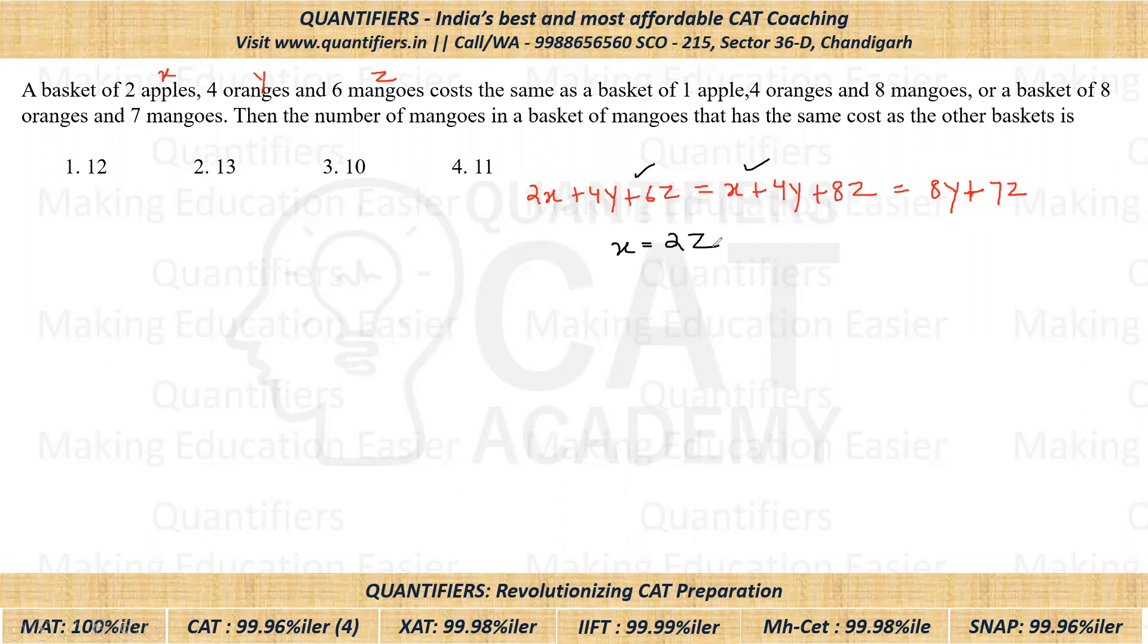So we have a relation. I have to use the second equation and the third equation. If I use the second equation and third equation and I'm putting X is equal to two Z, then two Z plus eight Z would be 10Z. So four times Y plus ten times Z will be equal to eight times Y plus seven times Z. So we get four times Y is equal to three times Z.